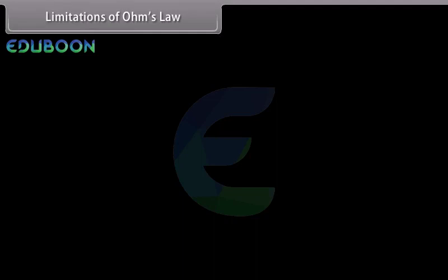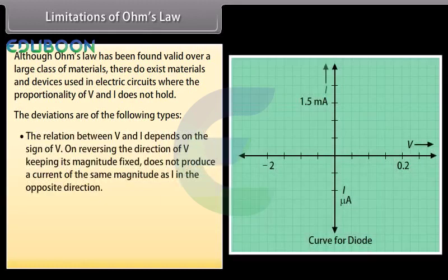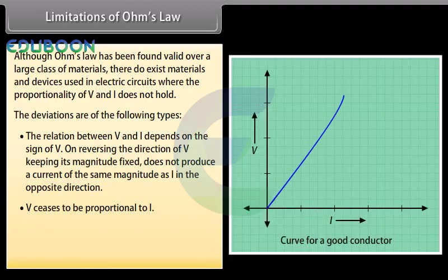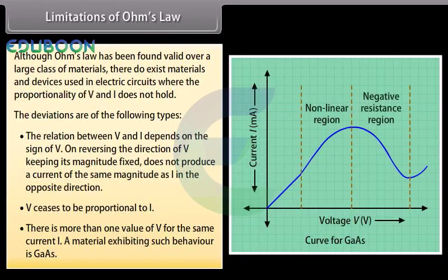Limitations of Ohm's Law: Although Ohm's Law is valid over a large class of materials, there exist materials and devices where the proportionality of V and I does not hold. The deviations are of the following types: the relation between V and I depends on the sign of V; reversing V does not produce a current of the same magnitude in the opposite direction; V ceases to be proportional to I; and there is more than one value of V for the same current I. A material exhibiting such behaviour is gallium arsenide.